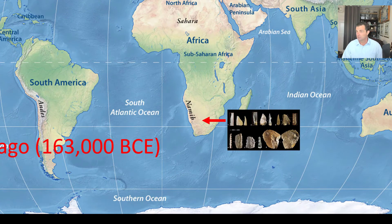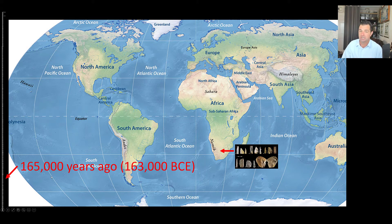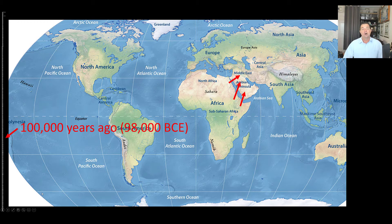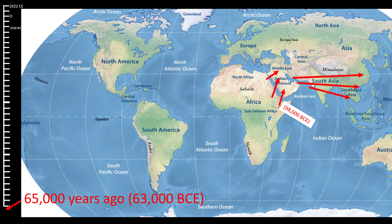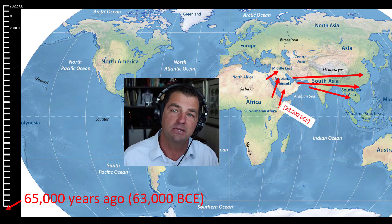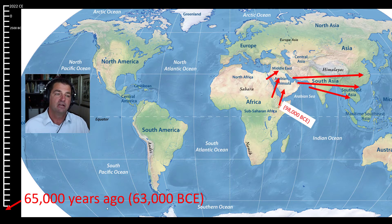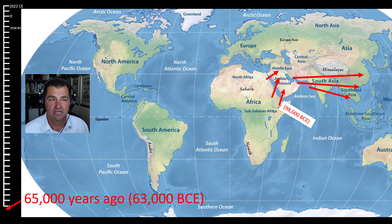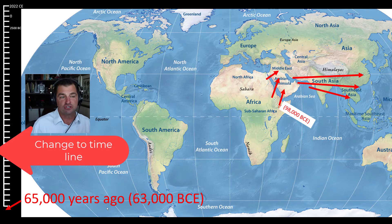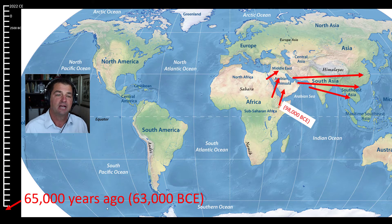These early humans probably traveled along the coast and used the ocean as a source of food, dating back to very close to the beginning of our species. Around 98,000 BCE, humans begin moving out of Africa. By around 63,000 BCE, humans migrated throughout Asia. To be clear, 'out of Africa' doesn't mean everyone left — some obviously stayed — but humans were expanding into new locations. The timeline scale on the left changes to reflect our move closer to the current time.